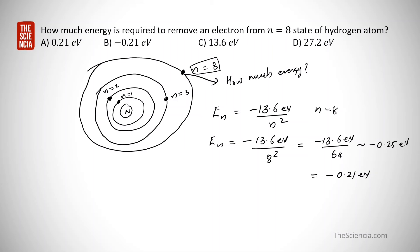To remove this electron, which is bound to the hydrogen atom, we must supply additional energy to bring its total energy to zero. Along with the minus 0.21 eV, we must provide an additional 0.21 eV. Therefore, the energy required to remove the electron from the N equals 8 state of hydrogen is 0.21 eV.